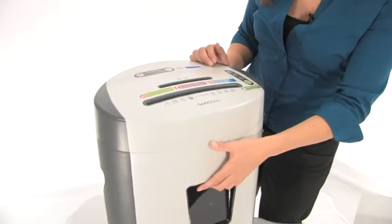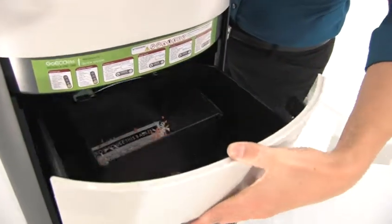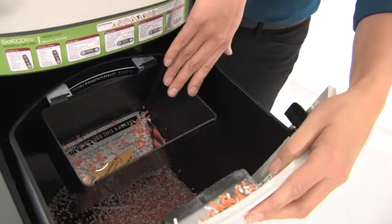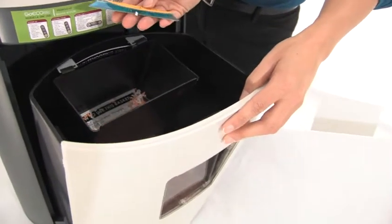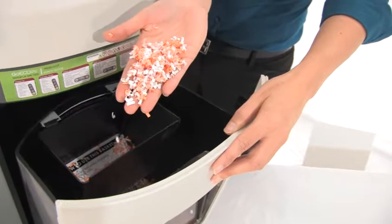Let's check out our 6.1 gallon bin. Just open it up right here and as you can see there is a separate box here for CD shreds. There they are. And paper shreds. This is what they look like. Very very small. No one is going to be able to read your personal information.